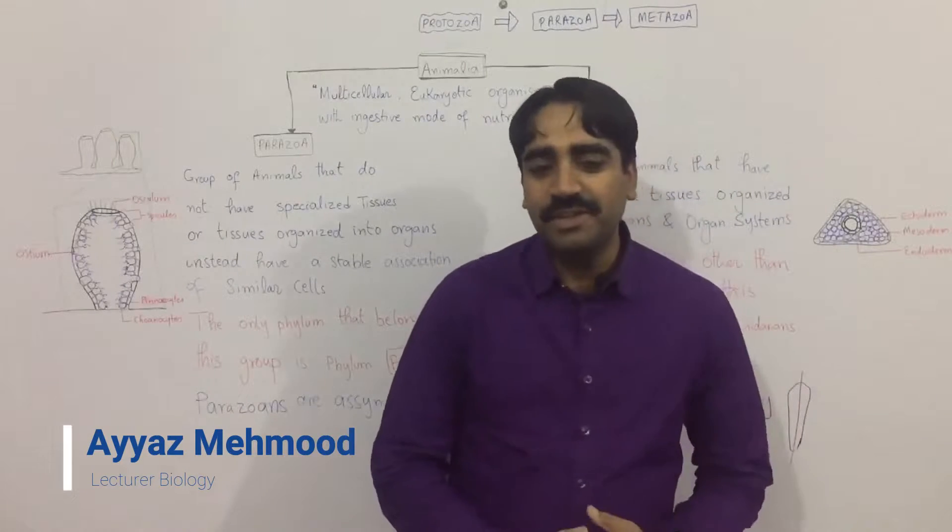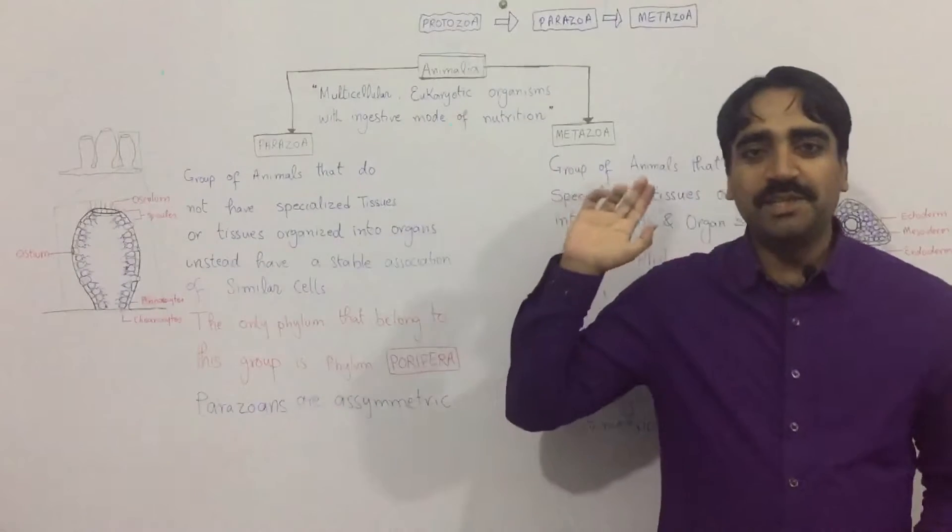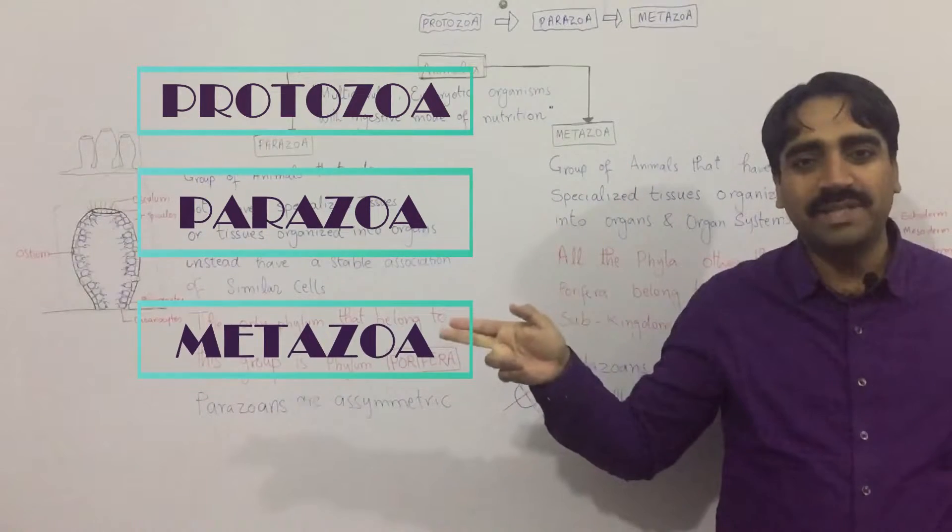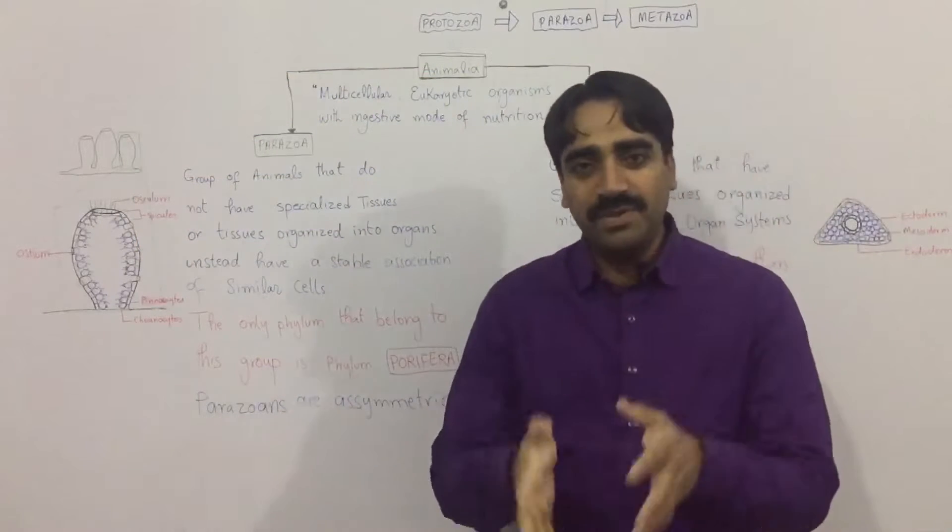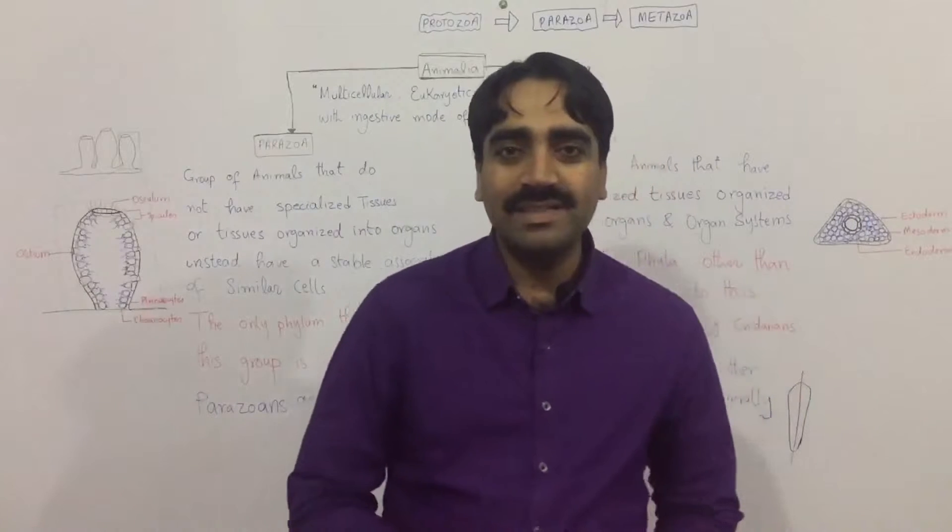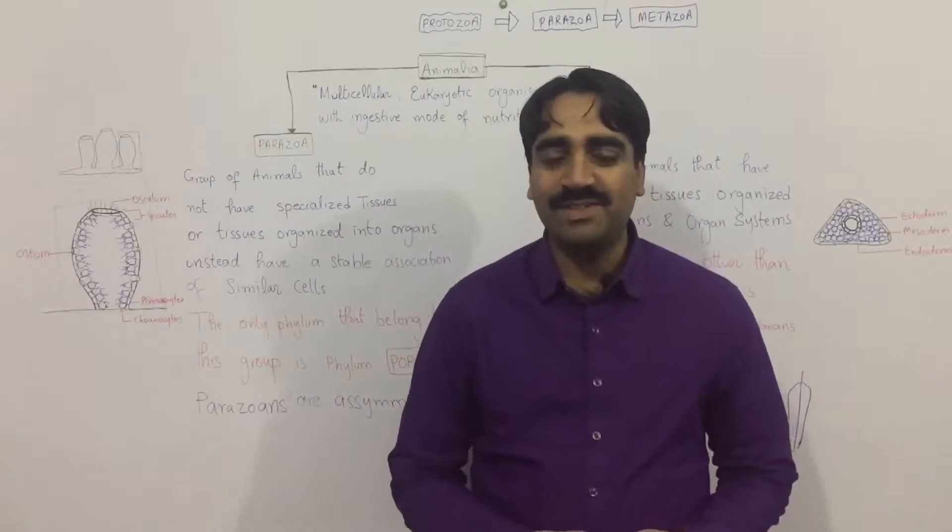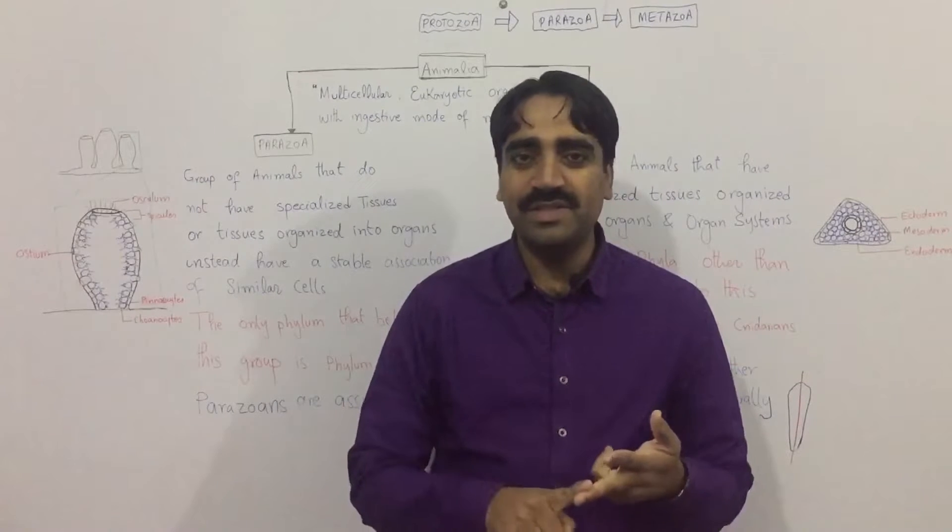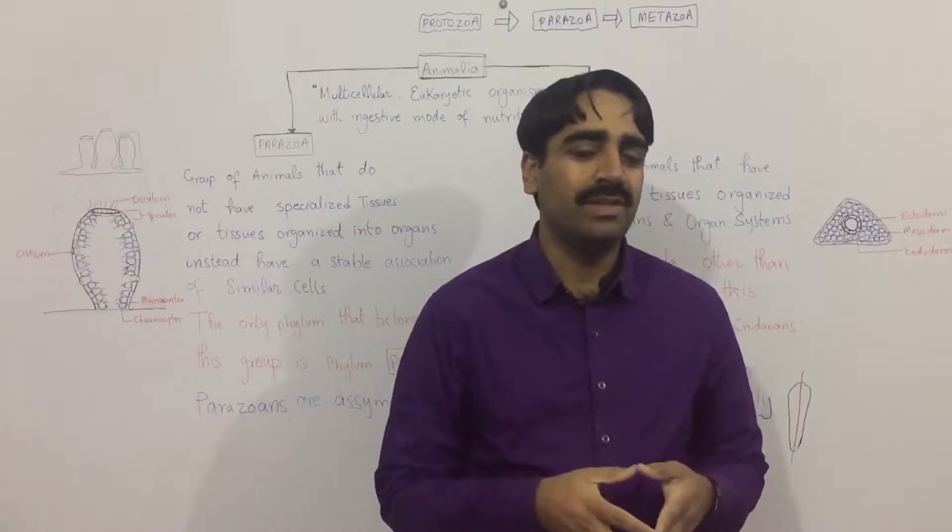What is the difference between the three groups: the protozoa, the parazoa, and the metazoa? The protozoans are considered as the ancestors of the animals because they are simple—they are unicellular and some of them are colonial.